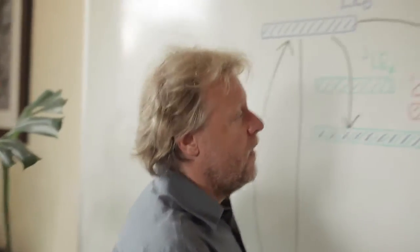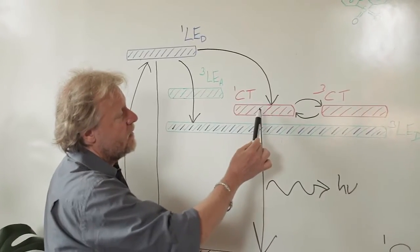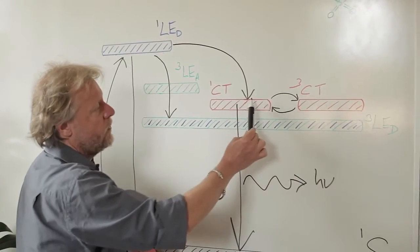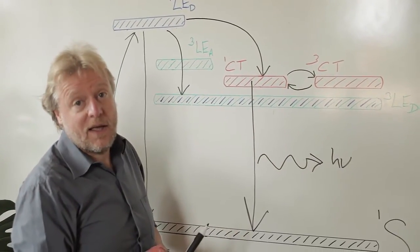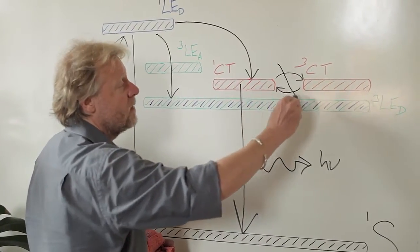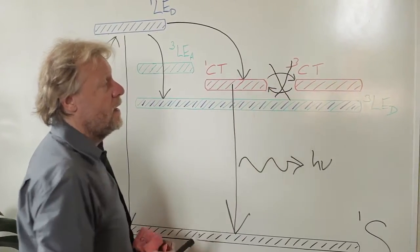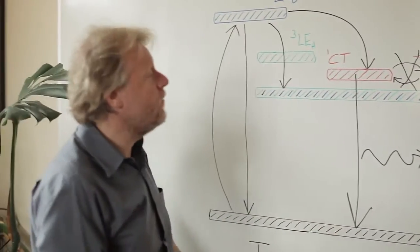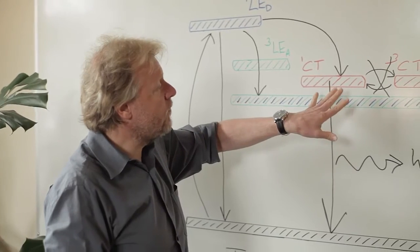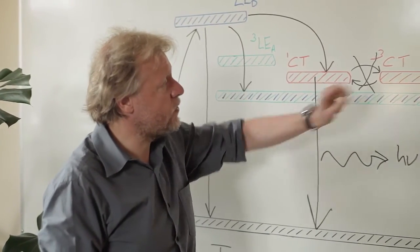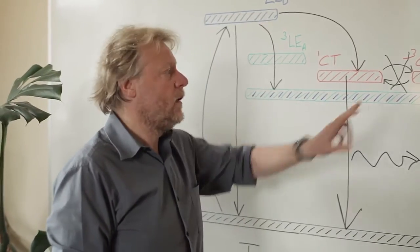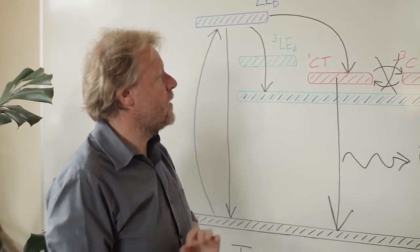The first thing to note is that this interconversion between the charge transfer singlet triplet state is actually a forbidden process. It can't happen. You cannot have a spin flip mechanism that takes you from the singlet CT to the triplet CT or the triplet CT back to the singlet CT. That's fundamentally a forbidden process.